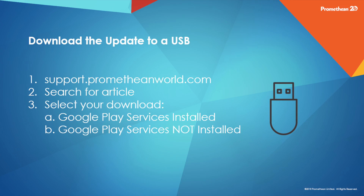Insert your USB with the update preloaded. You can download the newest update at support.prometheanworld.com. You will search for the new ActiveConnect update article and download your update file to your USB. Note that you will see two files: one for devices that have Google Play services installed, and one for devices that have not installed Google Play services.